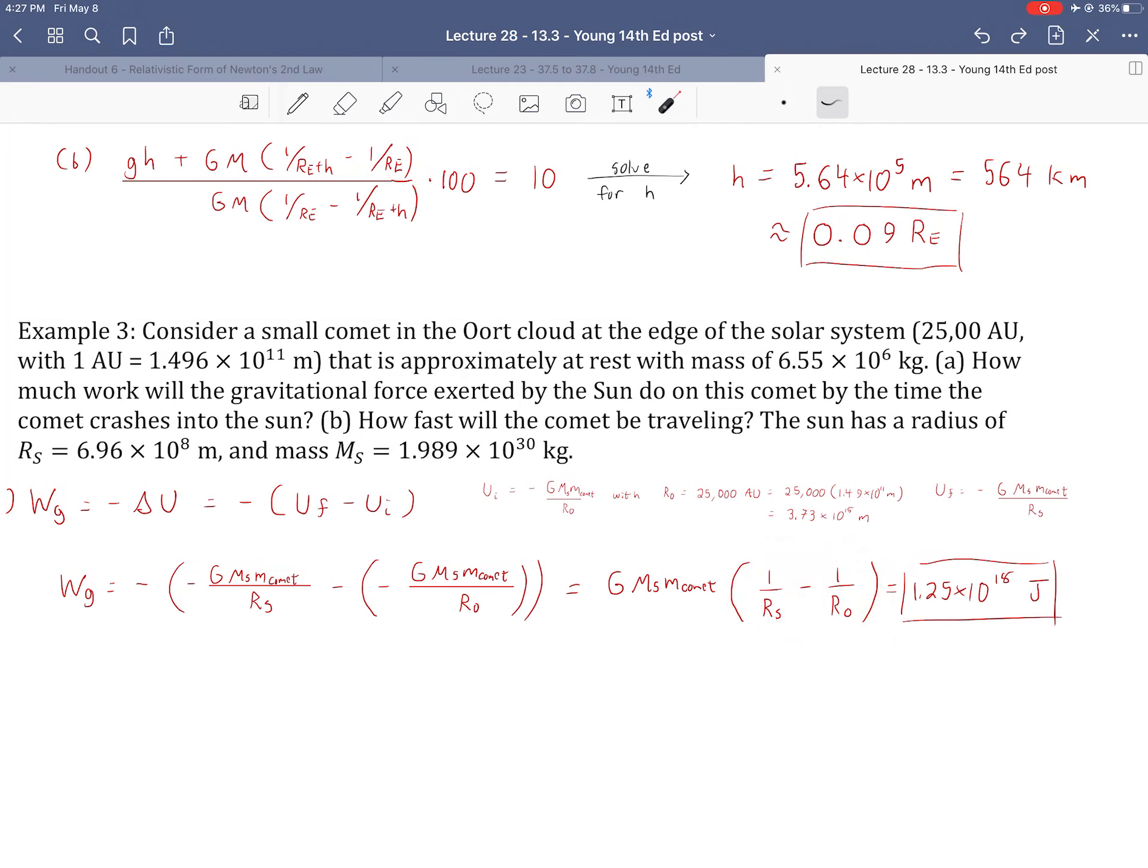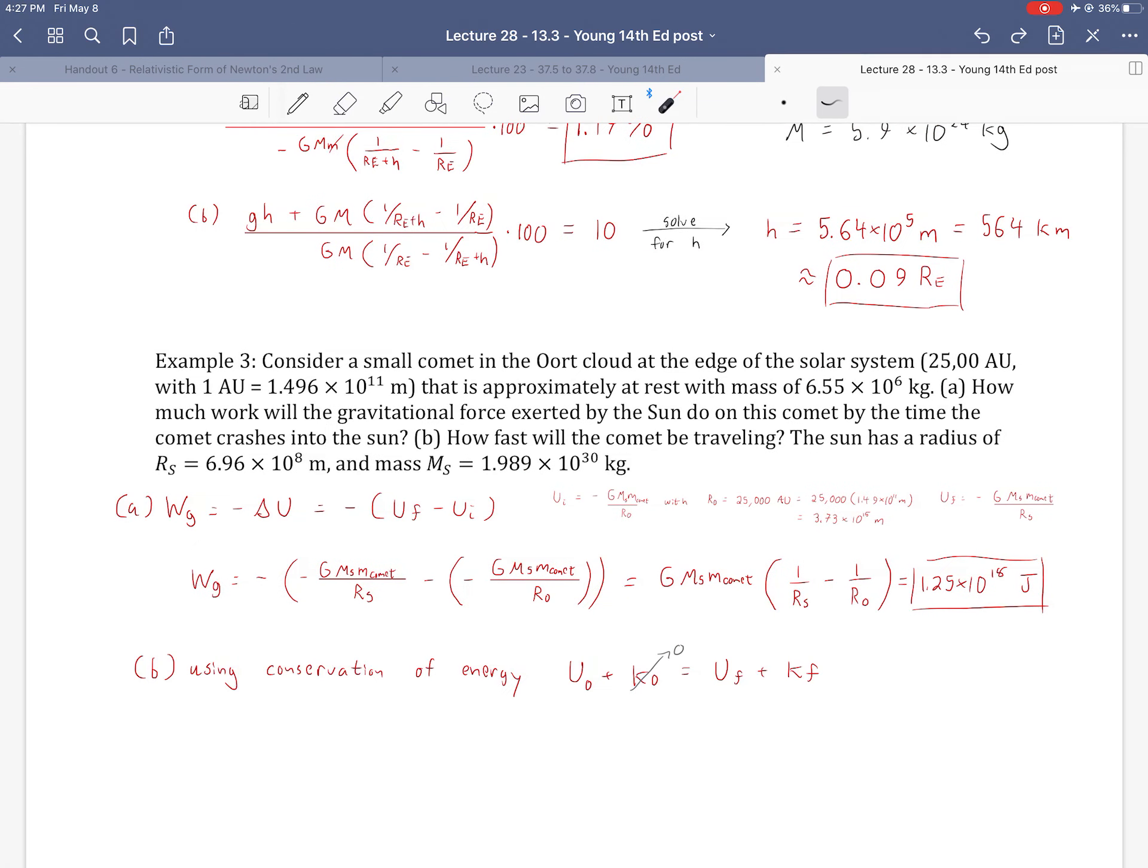And it should be positive because the work done by gravity while being pulled into the sun is positive work, because the angle between the displacement and the force is parallel, 0 degrees, cosine of 0 is 1, positive 1. So we've got the number of joules, quite a bit. 10^18. We've got a million trillion joules of energy being done on this comet as it falls towards the sun.